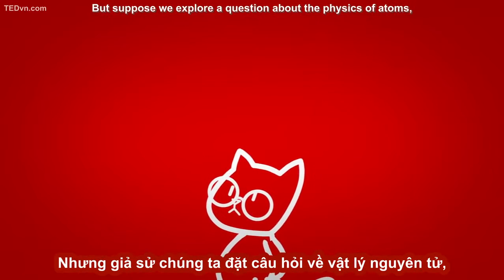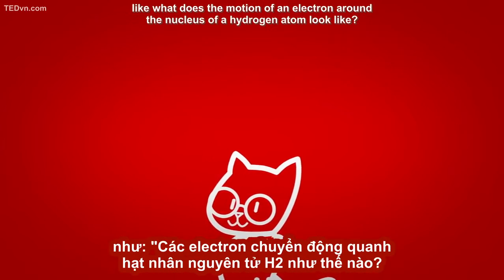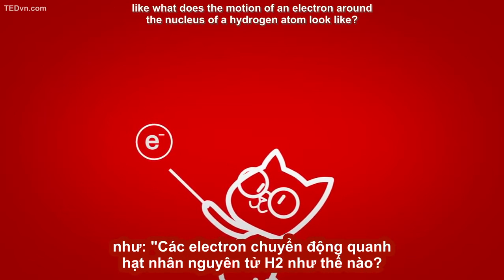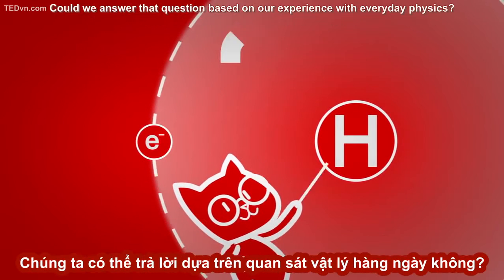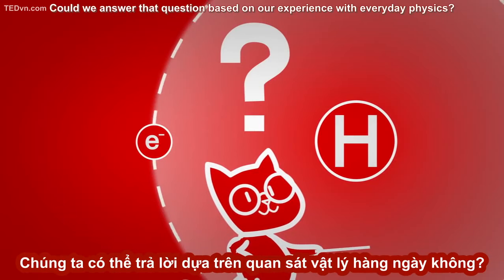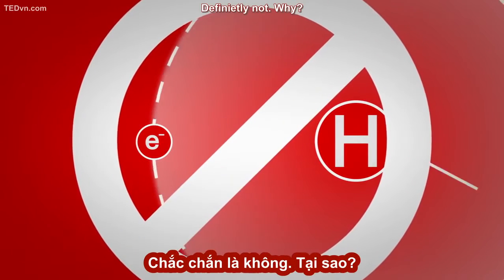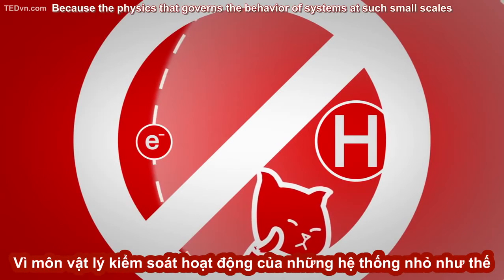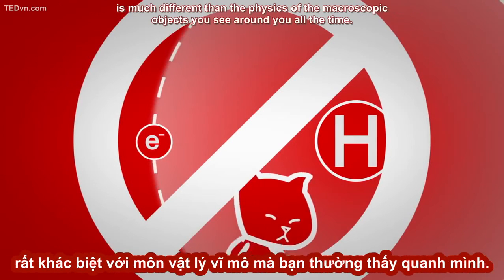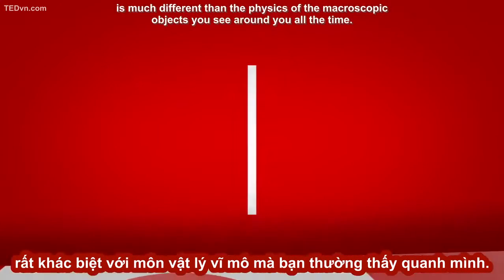But suppose we explore a question about the physics of atoms, like what does the motion of an electron around the nucleus of a hydrogen atom look like? Could we answer that question based on our experience with everyday physics? Definitely not. Because the physics that governs the behavior of systems at such small scales is much different than the physics of the macroscopic objects you see around you all the time.